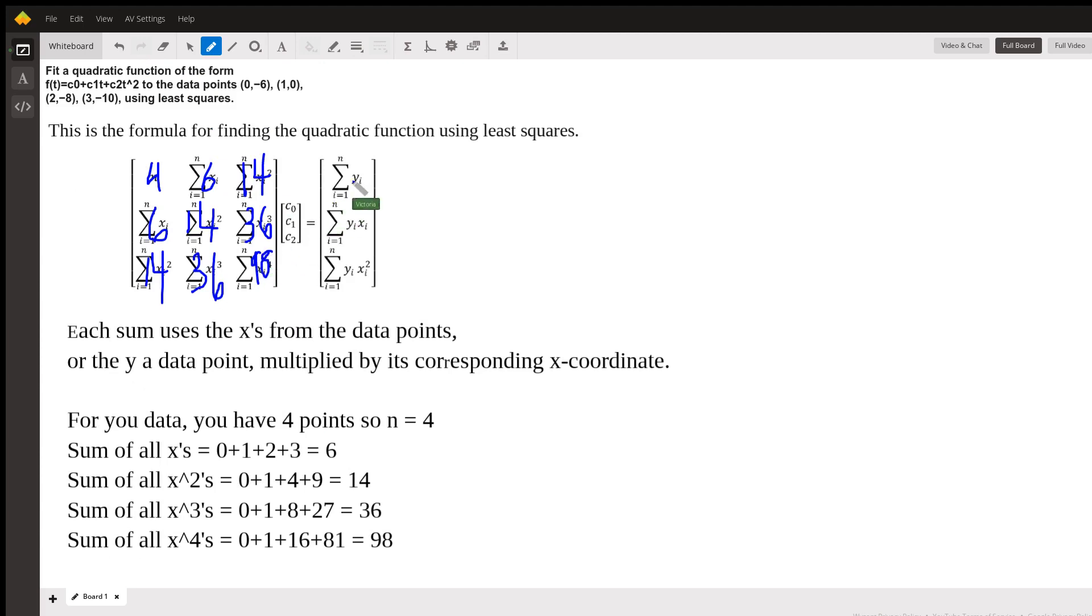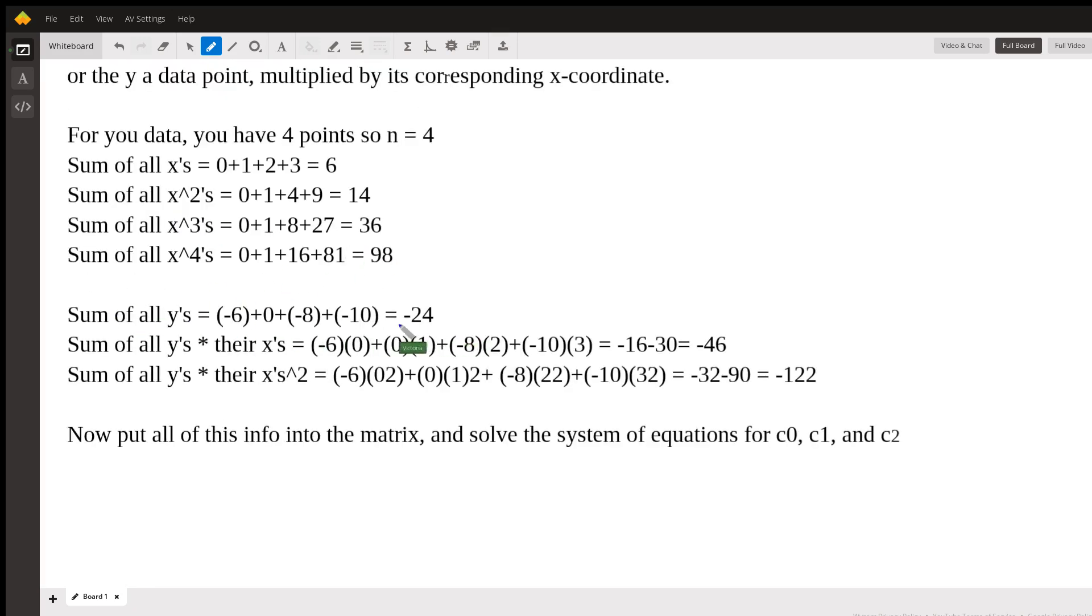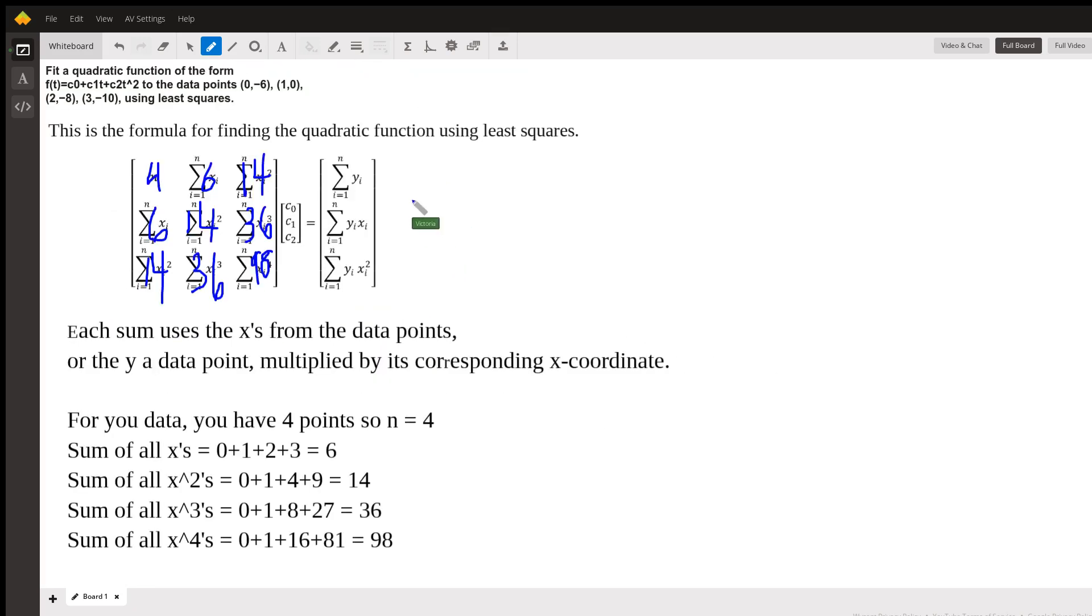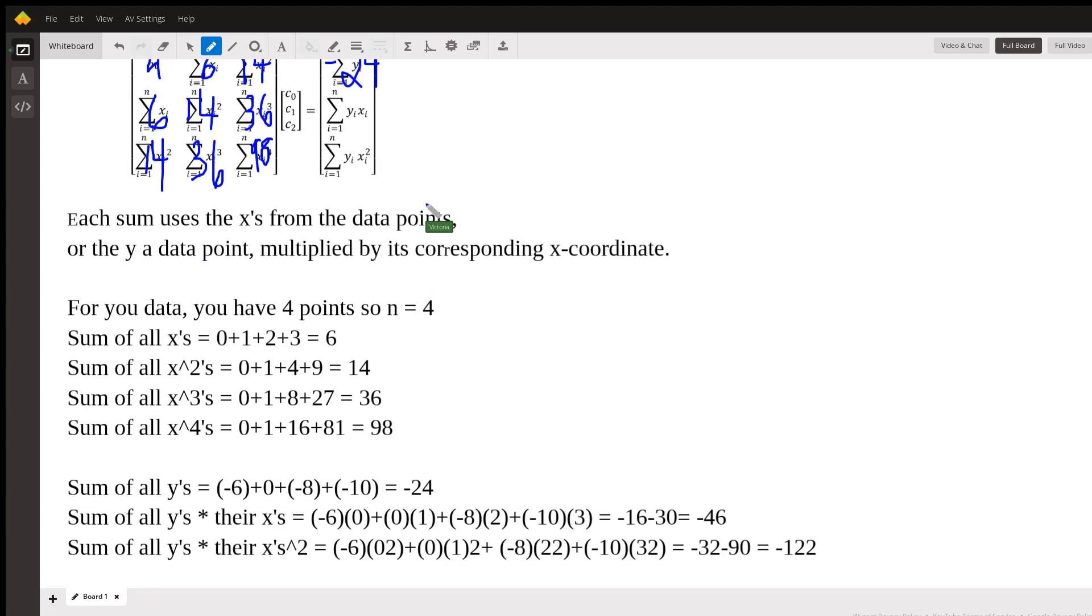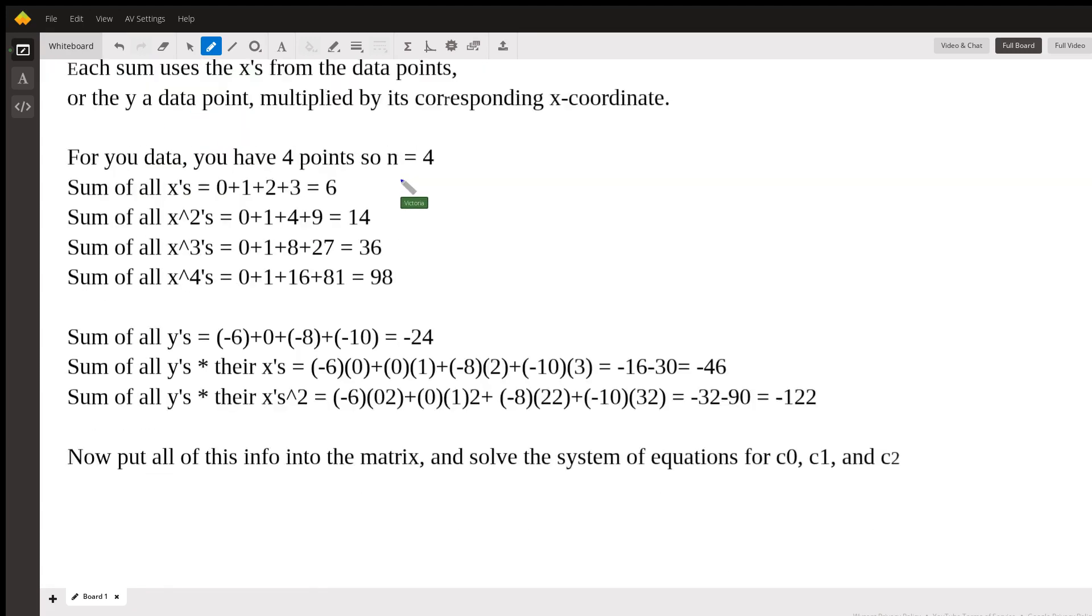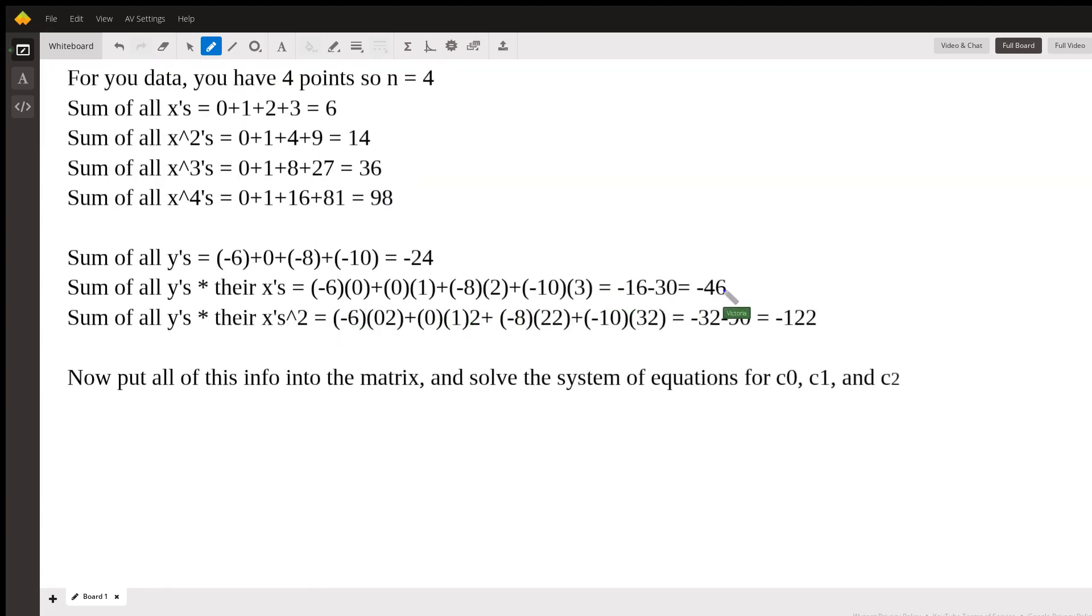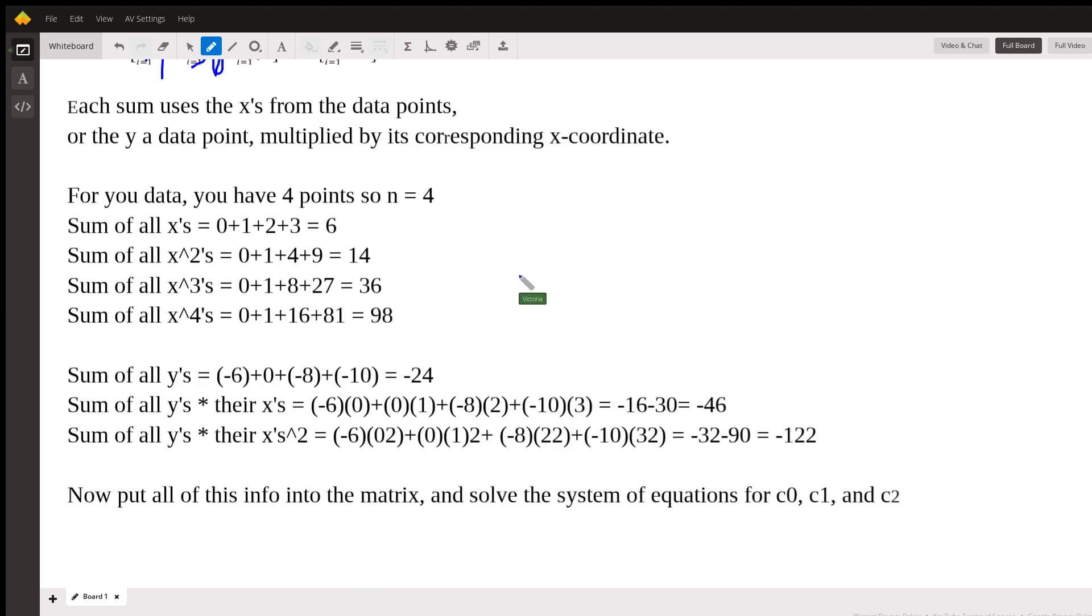And so then I did the same with the y's. I added up all the y's, which is negative 6 plus 0 plus negative 8 plus negative 10, which made that, we see it down here, negative 24. So this is a negative 24 in this spot. And then we want each y times its x, which we did here, which gives us negative 46.